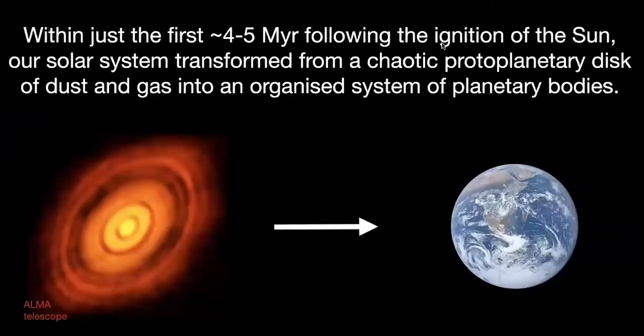During just the first four to five million years following the ignition of our sun, our solar system underwent a profound transformation from this chaotic protoplanetary disk of dust and gas, I'm showing an example here on the left, into an organized system of planetary bodies. The behavior of each planet in our solar system, including their ability to support life, can trace its origins back to the processes involved in this transformation. The phenomena that operated in our protoplanetary disk set the scene for each planetary evolutionary pathway, including any exoplanetary system as well.